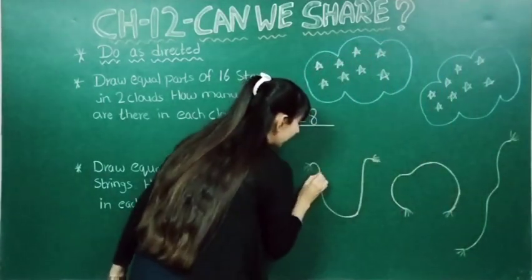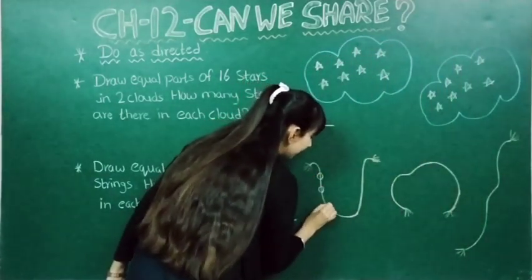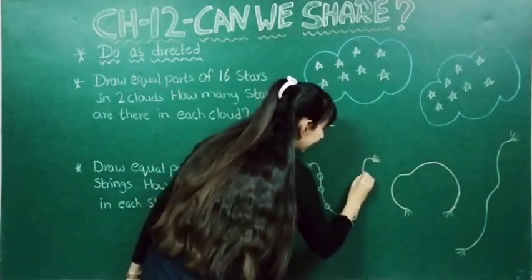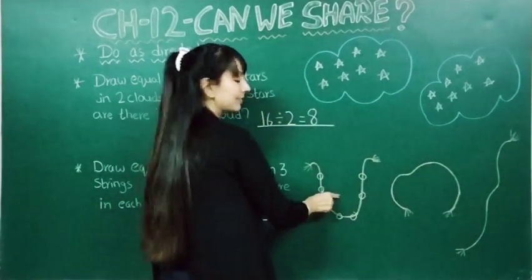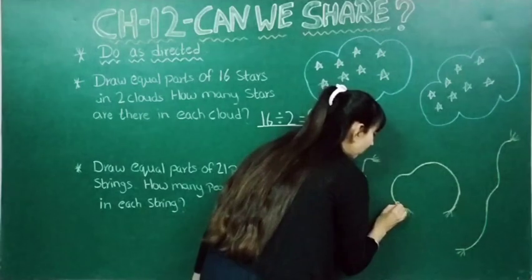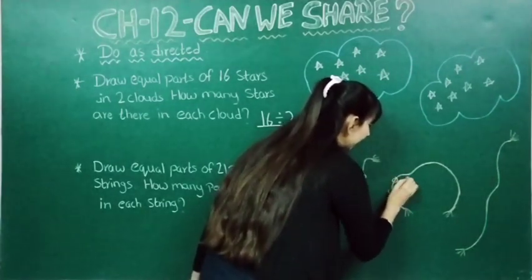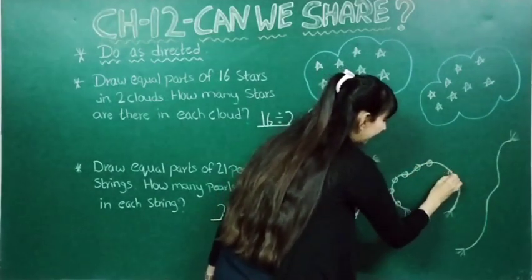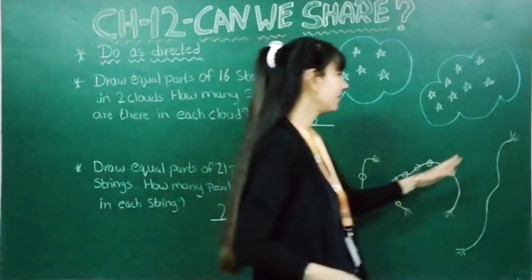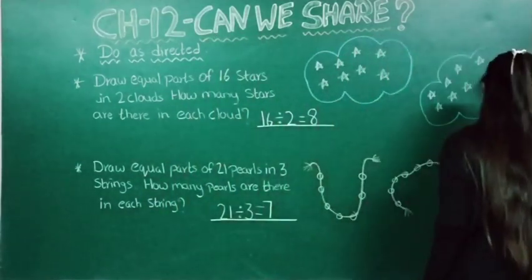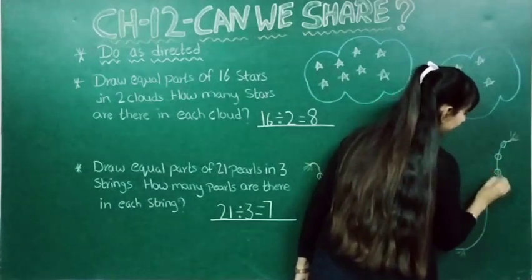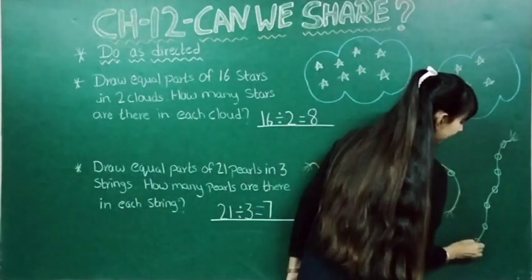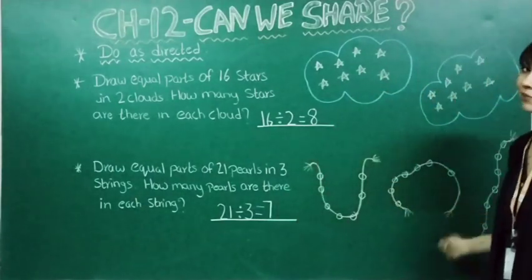Now let's do it. In the first string: one, two, three, four, five, six and seven. Seven in this string. Now seven again in the second string: one, two, three, four, five, six and seven. Now seven in the third string: one, two, three, four, five, six and seven. Like this you have to do.